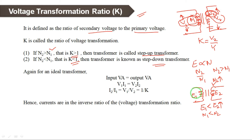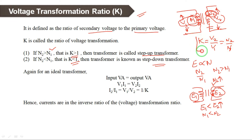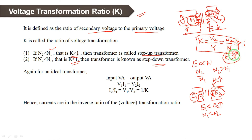In a step-up transformer, secondary voltage is more compared to primary. So N2 more compared to N1 means it is a step-up transformer. K is equal to V2 by V1, which is also equal to N2 by N1, because voltage is directly proportional to number of turns. If N2 is more than N1, more turns divided by less turns gives a ratio greater than 1, so K greater than 1 means step-up, and K less than 1 means step-down.